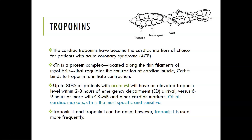The molecule of troponin is present in other muscle — skeletal muscle and all that — but we can differentiate between the regular muscle version and the cardiac one because it is slightly different. Up to 80% of patients with an acute MI will have an elevated troponin level within two to three hours of emergency department arrival, versus six to nine hours or more with CKMB. Of all cardiac markers, cardiac troponin is the most specific and sensitive for a heart attack.